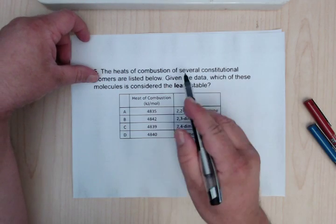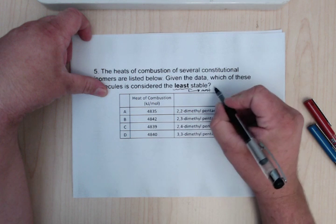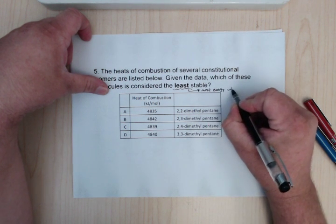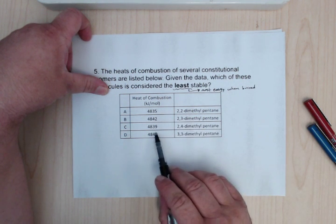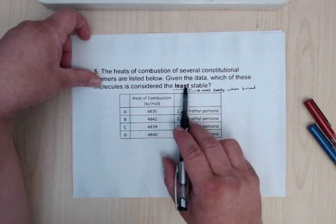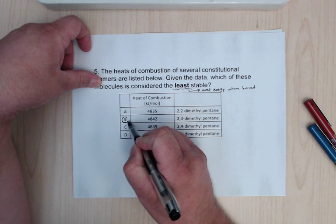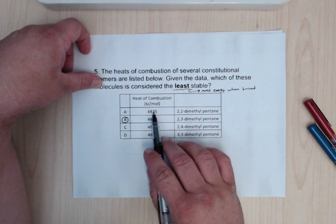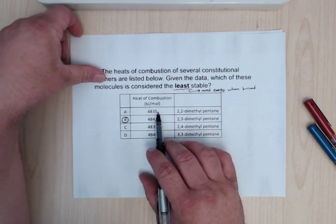So here what you need to do, if you're looking for least stable, you're looking for the most energy when burned. So for here you just go on this list, so the most energy, the least stable would be the highest number here. So if you're going to ask for the most stable, it would be this one here, the A, because it has the lowest number.